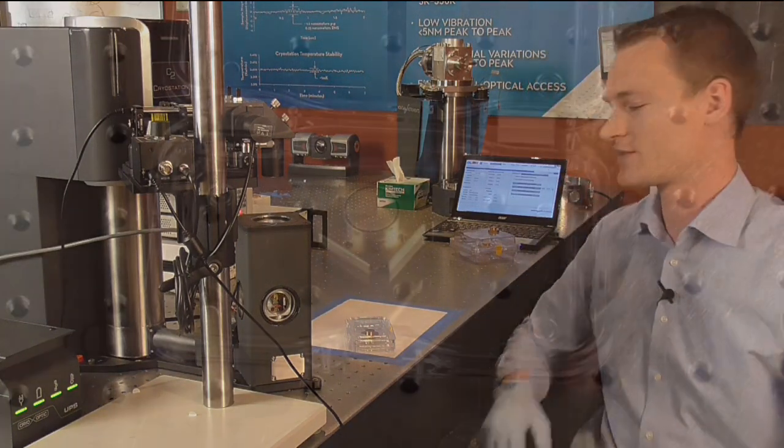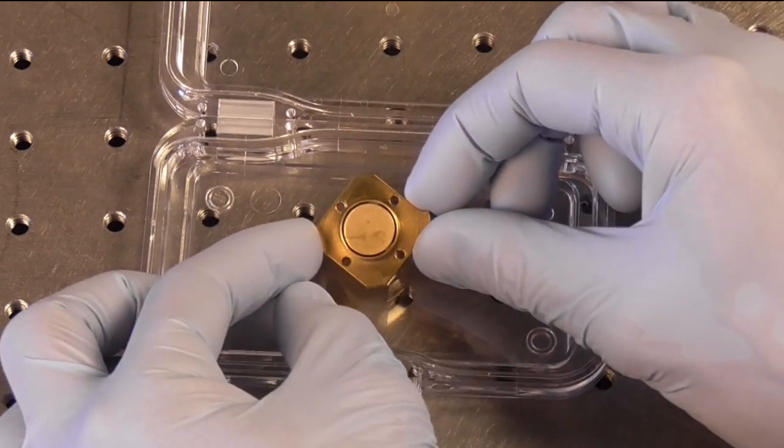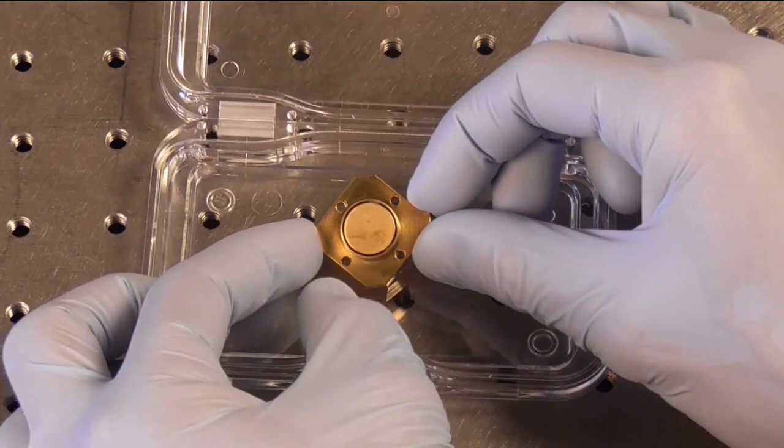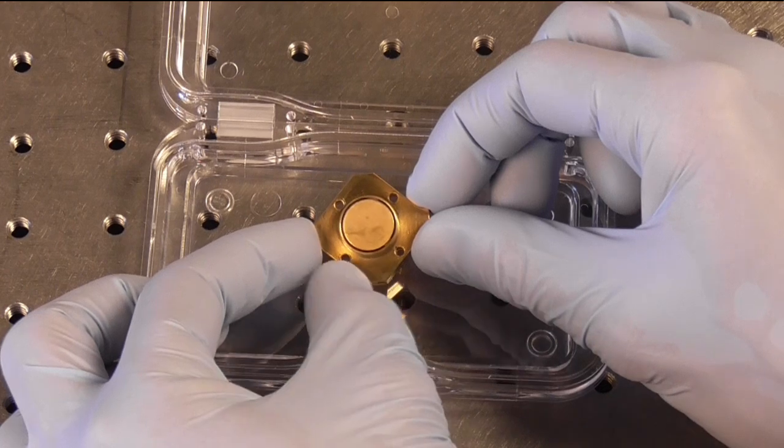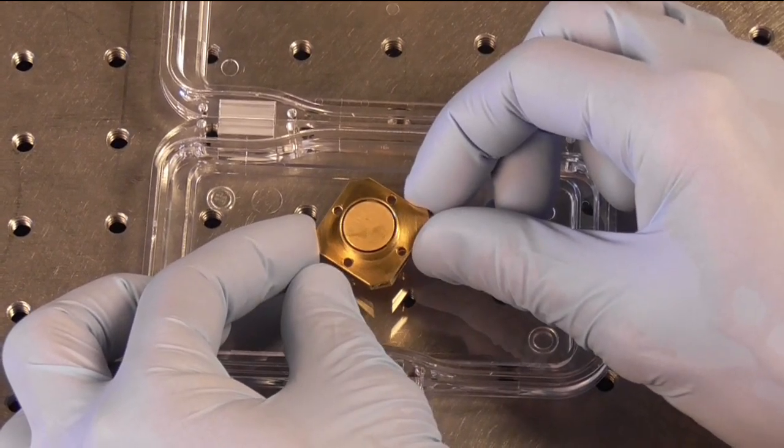So let me show you what the Agile Temperature Stage looks like. Here you see the Agile Temperature Stage which has a sample platform of just over half an inch. Surrounding the platform you see the radiation shield, which stays within 10 Kelvin of your base temperature over the full temperature range of the platform.